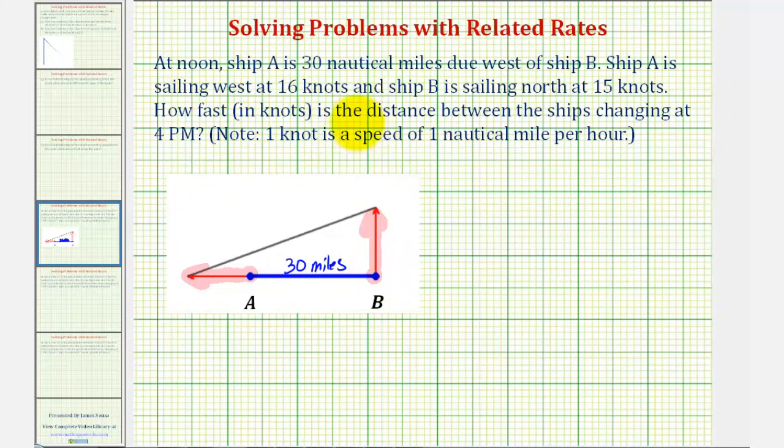How fast in knots is the distance between the ships changing at 4 PM? Well, first thing to notice is from noon to 4 PM would be four hours, and therefore for this problem, T time equals four hours.